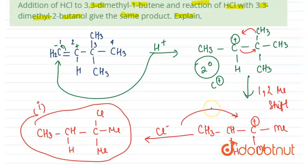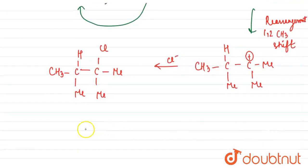This product was formed by a 1,2-methyl shift, because the 1,2-methyl shift gives a three degree carbocation which is more stable. Now we will do the same reaction for 3,3-dimethyl-2-butanol.